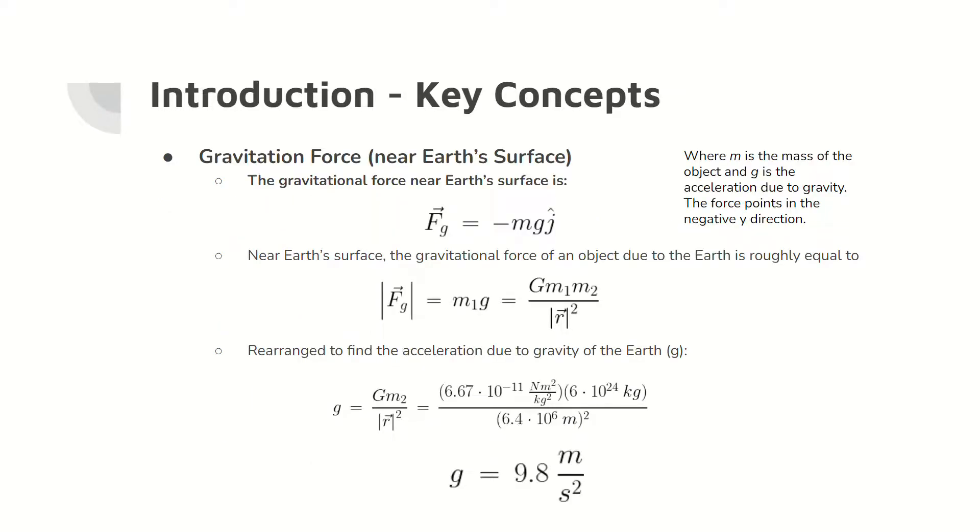The second key concept is the gravitational force acting on an object. The gravitational force for an object near Earth's surface equals the product of the object's mass and acceleration due to gravity, g, in the negative y direction. This product, mg, also equates to the law of universal gravitation. Manipulating the equation allows us to find the value for g on Earth, 9.8 meters per second squared.